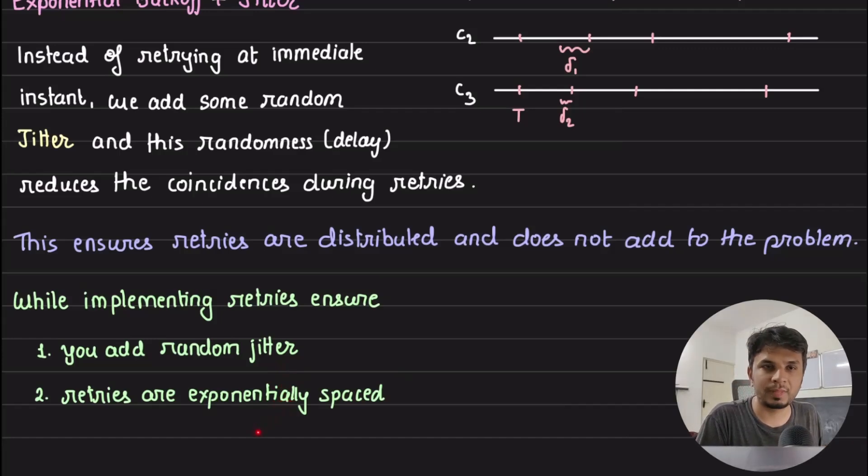In most cases we don't typically do it, so if you are writing your own retry logic, ensure that you are adding random jitter and your retries are exponentially backed off. In the description of this video I have added a few resources that would help you understand this in a little more granularity. In general, just keep this thing in mind that whenever you are writing your retry logic you follow these two steps. I hope you found it interesting and amazing, and I'll see you in the next one. Thanks a lot.